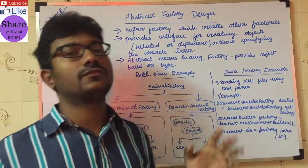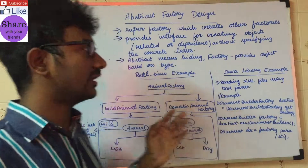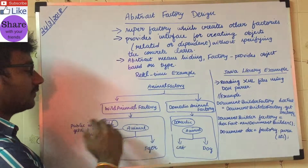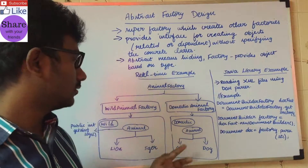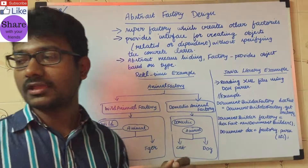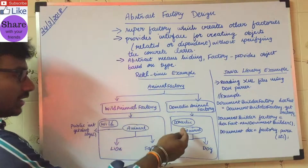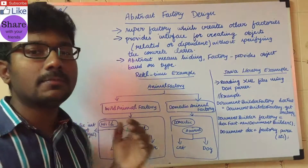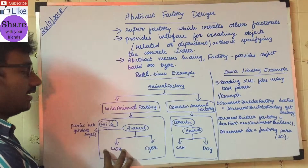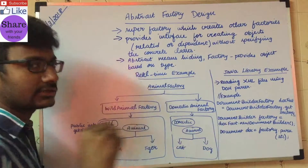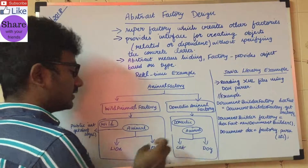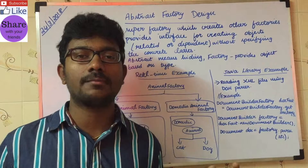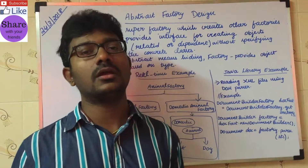So that's the gist of the abstract factory design. Here is a real-time example. I have classified animals into two types: domestic and wild. Cat and dog belong to the domestic category; lion and tiger belong to the wild category. Technically, Animal is an interface with a method called public getLegs(). The actual implementation for that method is present in the Lion, Tiger, Cat, and Dog concrete classes. These classes return the actual number of legs — for example, cat, dog, lion, and tiger all have four legs, so they return four.